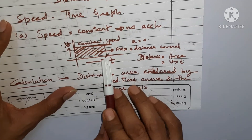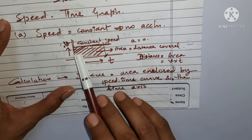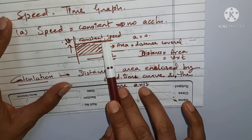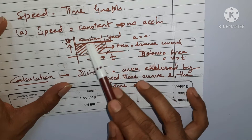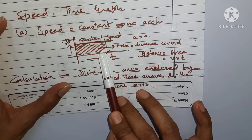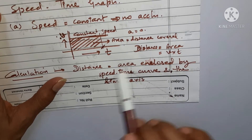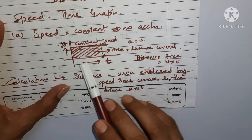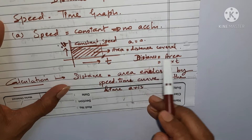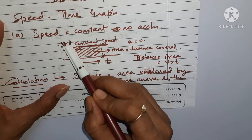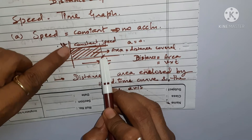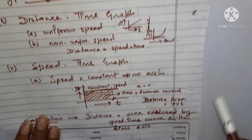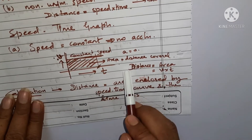From this constant-speed graph, we can calculate distance. The distance equals the area enclosed by the speed-time graph and the time axis. Since this area forms a rectangle, the distance is given by the area of the rectangle, which equals velocity multiplied by time — the same formula: distance = speed × time.